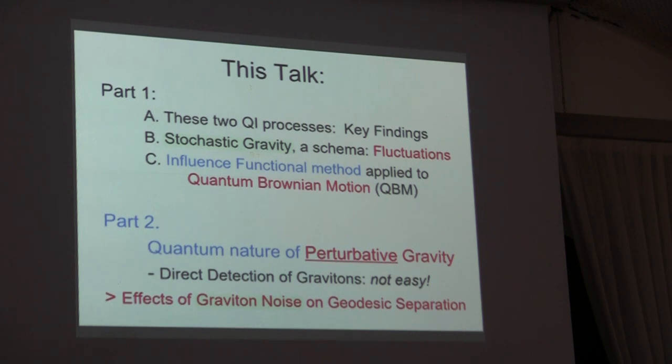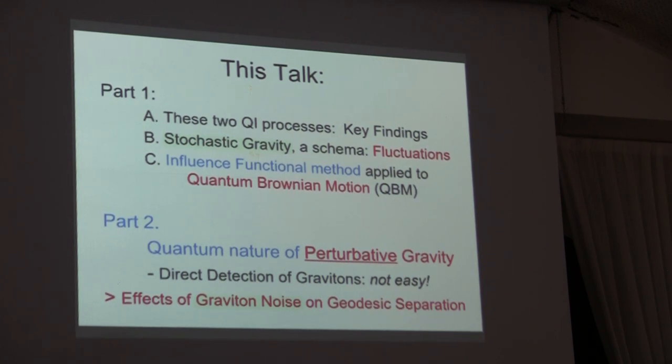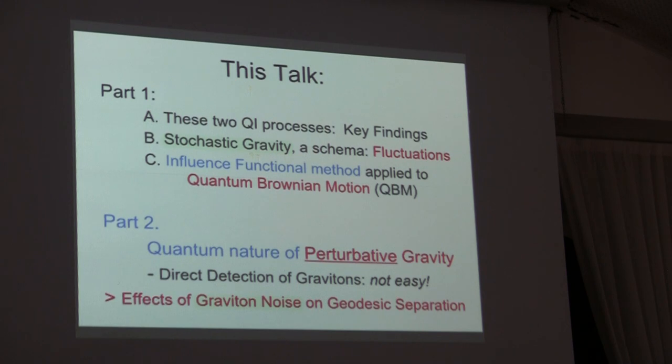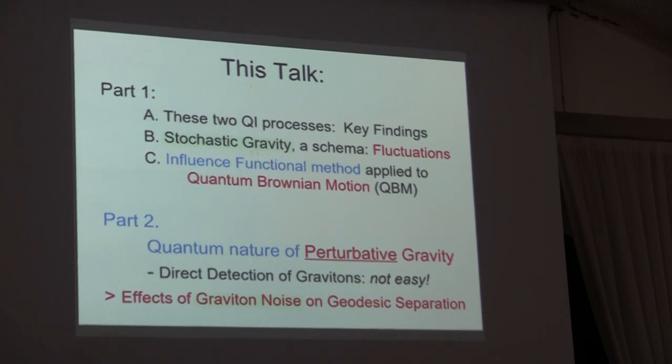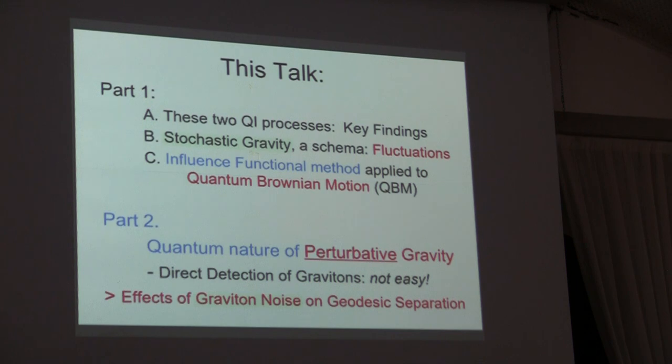The first part is about stochastic gravity and the quantum Brownian motion by way of the influence functional method. That's the only way that I see how noise can be introduced in a complete quantum field theoretical setting. It's cell consistency, band reduction cell consistency.